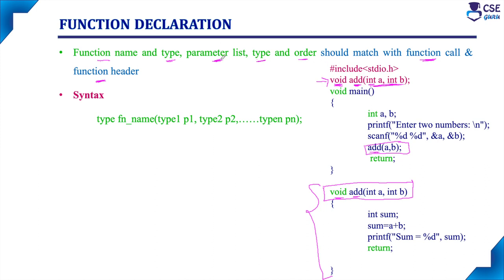The parameter list must match in all three cases: function declaration, function call, and function header. Here parameter A is integer and B is also integer. In the function call, A is integer and B is also integer. In the function header, both A and B are also integer — that must also match.